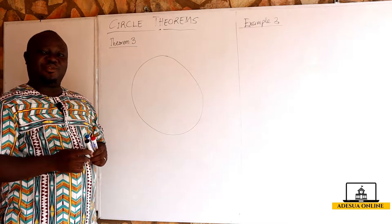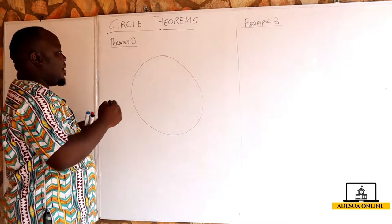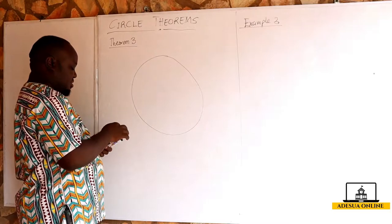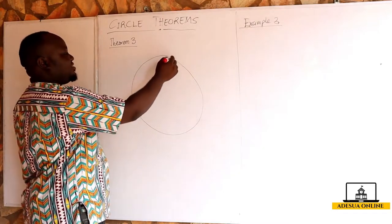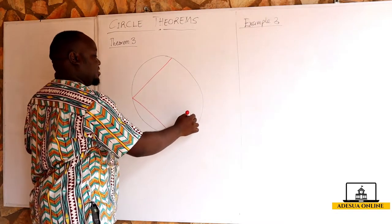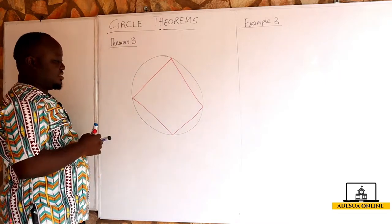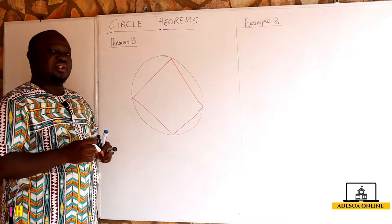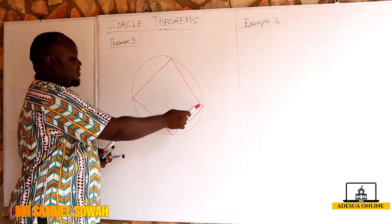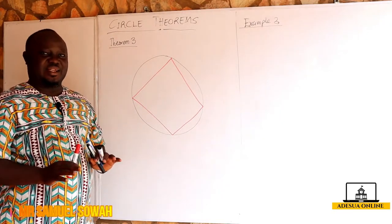We are going to continue with Theorem 3. Assuming I have a circle and a quadrilateral in the circle — a four-sided figure touching the circumference of the circle — we call this a cyclic quadrilateral. A cyclic quadrilateral is a quadrilateral which is touching the circumference of the circle. If it is not touching the circumference, it is not a cyclic quadrilateral.